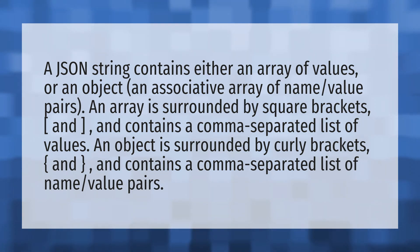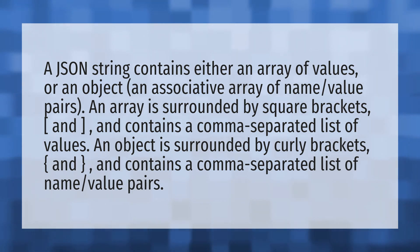An object is surrounded by curly brackets and contains a comma-separated list of name-value pairs.